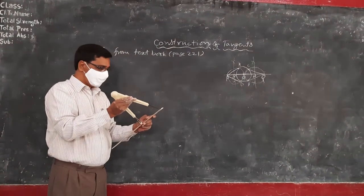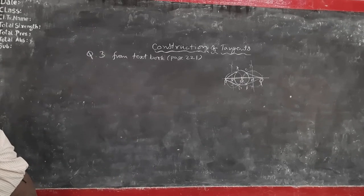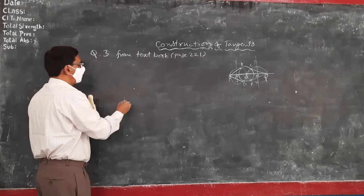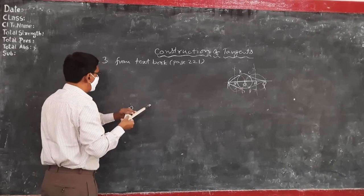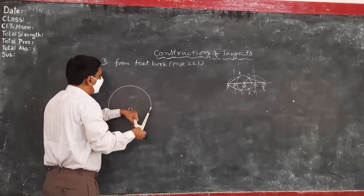With scale and compass, I am taking radius 3cm. Put it down, let it be O. Now, let O as center, I am constructing a circle of radius 3cm.